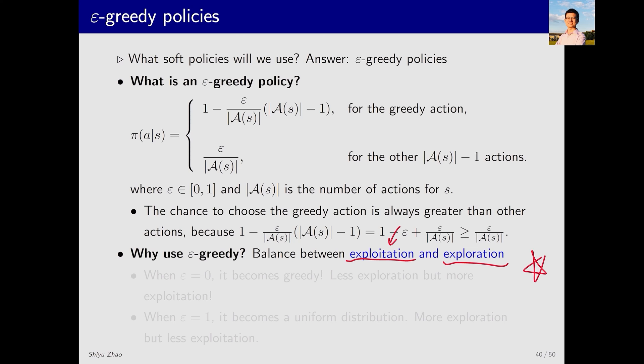Exploitation refers to maximizing our benefit according to the current situation. For instance, in a given state where multiple actions are available, if I have information that certain actions yield higher rewards, I should exploit this knowledge by choosing those actions in the next step. I believe that these actions will result in greater rewards in the future. This is called exploitation.